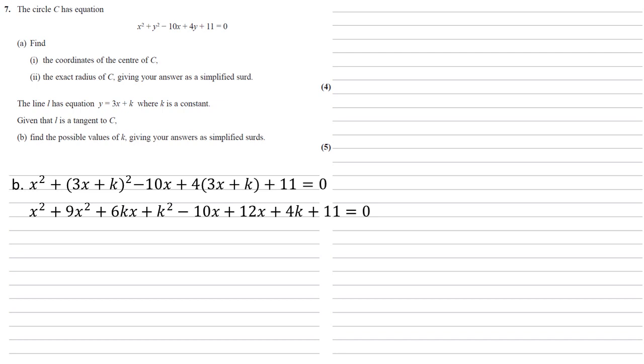Expanding brackets is x squared plus 9x squared plus 6kx plus k squared minus 10x plus 12x plus 4k plus 11 equals 0.